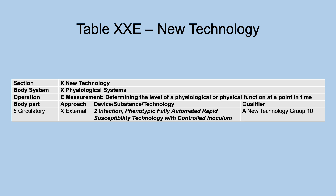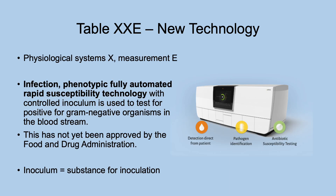Also in new technology physiological systems measurement: infection, phenotypical, fully automated, rapid susceptibility technology with controlled inoculum. A controlled inoculum is used to test for positive gram-negative organisms in the bloodstream. An inoculum is the substance being inoculated — they inoculate something to test for positive gram-negative organisms, and this method is faster than other tests. This has not yet been approved.